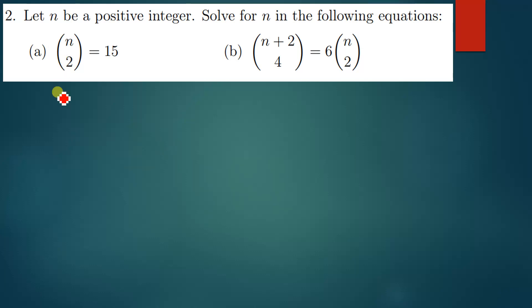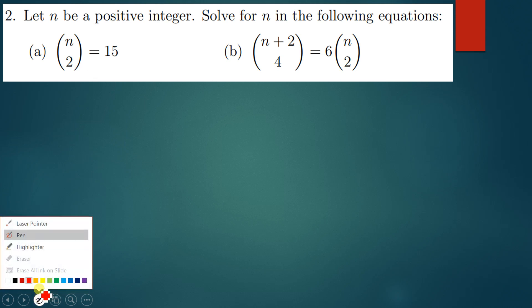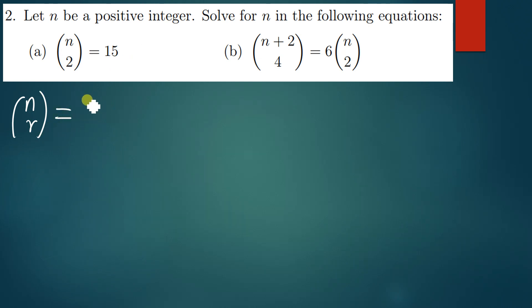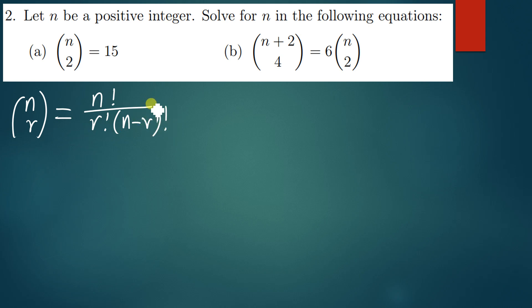So this is the question. The first question says n choose 2 is equal to 15. In the previous questions, I showed you how you can evaluate n choose r. We said this can be written as n factorial over r factorial times open brackets n minus r factorial. This is exactly what you are supposed to do if you've been given anything in this format.